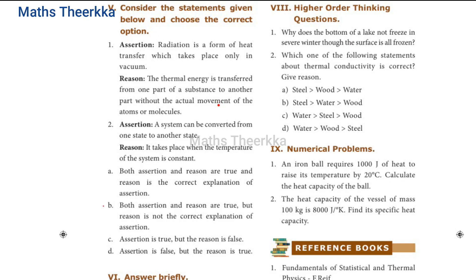Fifth roman. Consider the statements given below and choose the correct answer. First assertion. Radiation is a form of heat transfer which takes place only in vacuum. The reason is the thermal energy is transferred from one part of a substance to another part without the actual movement of the atoms or molecules. The answer is option B. Both assertion and reason are true but reason is not the correct explanation of assertion.